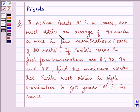one must obtain an average of 90 marks or more in five examinations, each of 100 marks. If Sunita's marks in first four examinations are 87, 92, 94 and 95, find the minimum marks that Sunita must obtain in fifth examination to get grade A in the course.